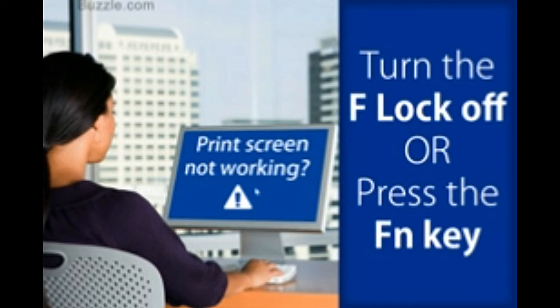Use Snipping Tool. If you find the print screen functionality not working in Windows 7 or Vista, there is an alternative way that you can take — use the Snipping Tool utility. Go to All Programs > Accessories > Snipping Tool. Using this program, which is a special tool developed by Microsoft, you can take screenshots of the whole or part of the desktop. It lets you crop certain parts when taking a screenshot.